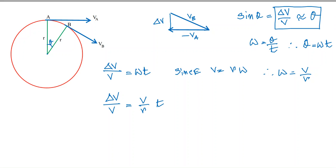Now you just bring t to the other side. That makes delta V by t equals V times V by r. V times V gives you V squared by r.